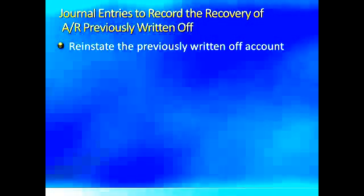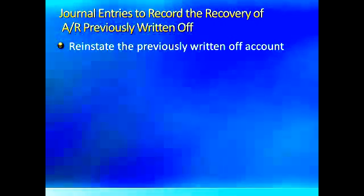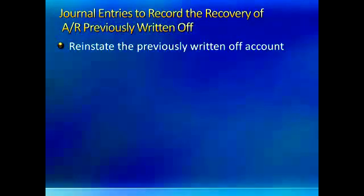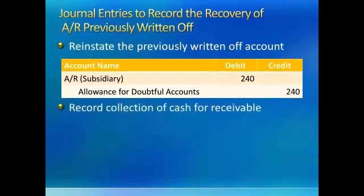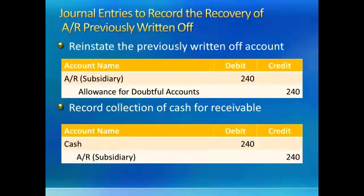If we've written off a customer in the past and that customer comes in and wants to pay us, the first step is to reinstate the previously written-off account. This means we do the opposite of what we did when we wrote the customer off — we debit accounts receivable and credit Allowance for Doubtful Accounts. After we reinstate the customer, we record the collection of cash by debiting cash and crediting accounts receivable.